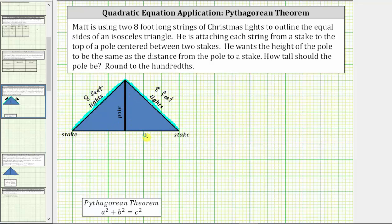Let's say this length is x feet. Then the pole is also x feet. And this length here is also x feet.